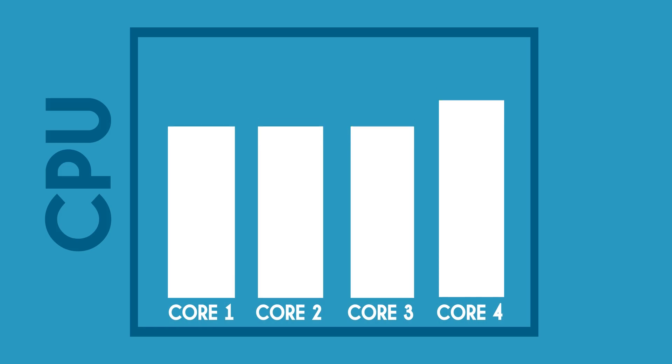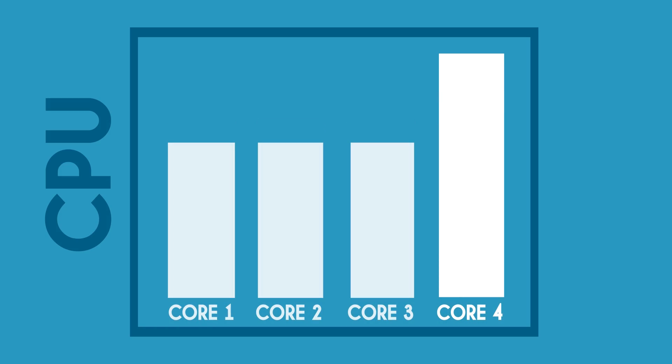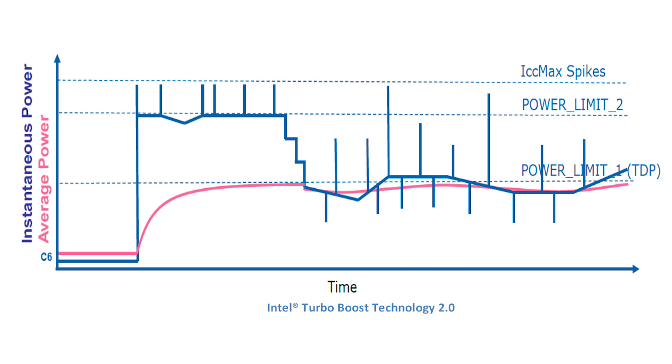Processors need to be kept below a maximum operating temperature called T-junction, at which point they will either stop working suddenly or engage advanced protection mechanisms to turn down their own performance to save themselves from being overheated and damaged. New or more advanced processors can do more than just turn themselves down. Intel's Turbo Boost, for example, does just the opposite — if you've got more than adequate cooling and some power and thermal headroom to spare, this technology will actually allow the processor to temporarily exceed its normal TDP to give a small boost in performance on demand.